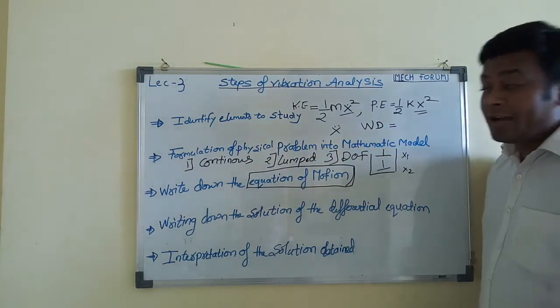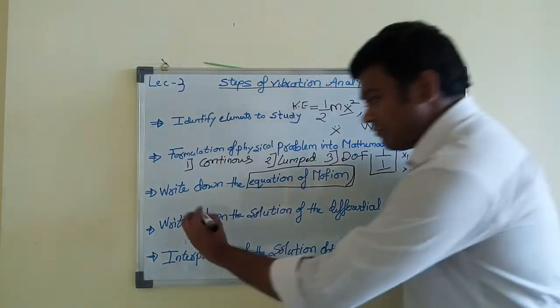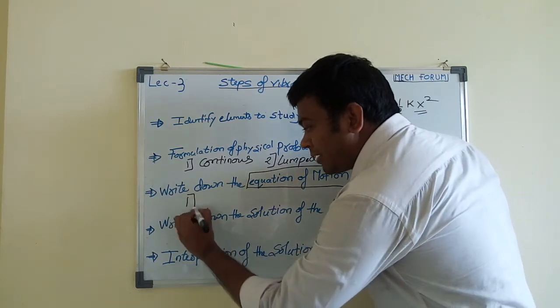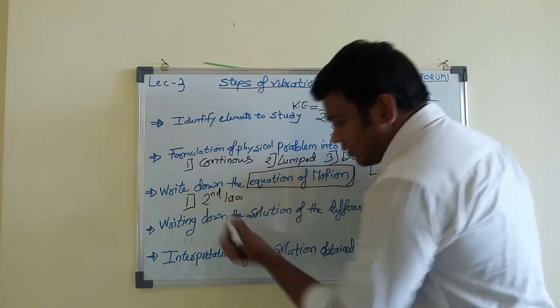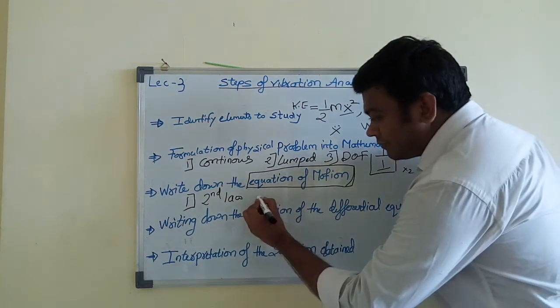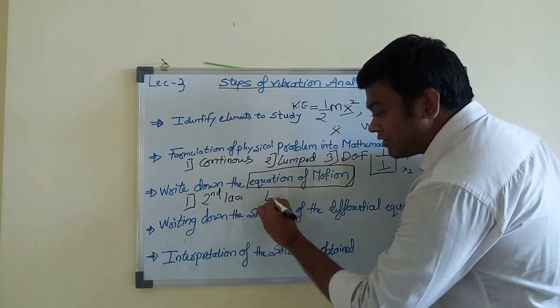What is the equation of motion, and what are the methods for writing it? Various methods are there. First is by using Newton's second law. Again, there is a method called the energy method.